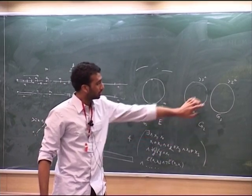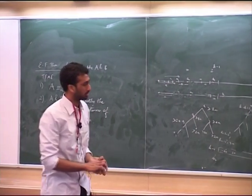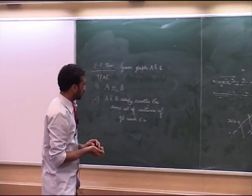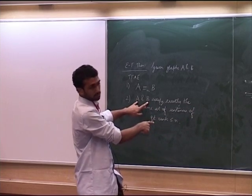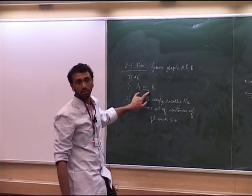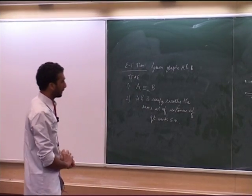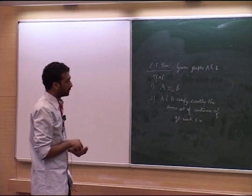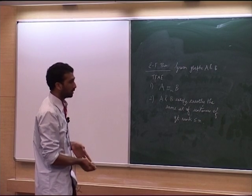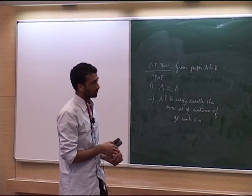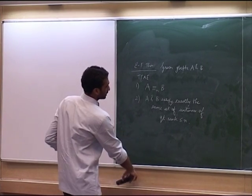So the graph of size three with a three-cycle satisfies this formula, while the two-copy graph does not — that's a distinguishing formula. The EF theorem gives us a method for showing inexpressibility proofs in first-order logic. I'll show some applications of this theorem in understanding the expressive power of first-order logic.